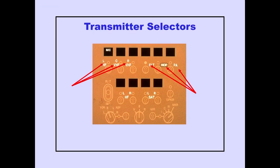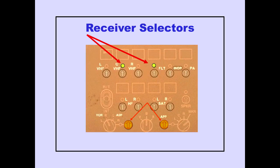The transmitter selectors select the radio or system used for transmission from that crew station. The receiver selectors are push-on, push-off switches which are rotated to adjust the volume of the receiver.